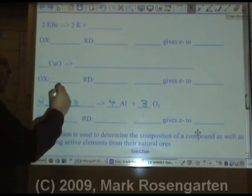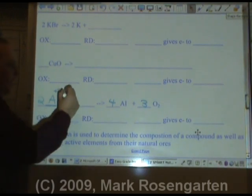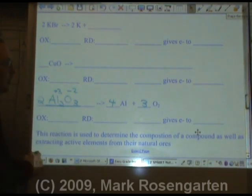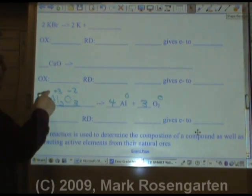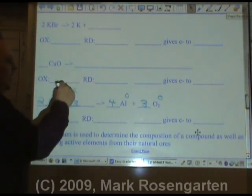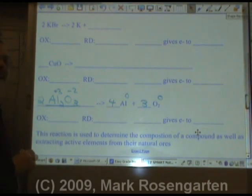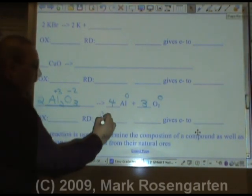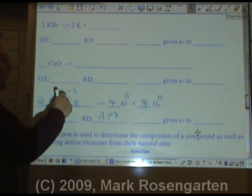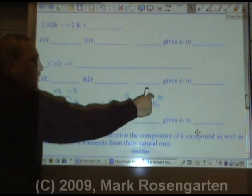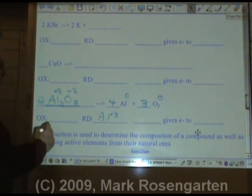Aluminum is plus three according to the periodic table. Oxide is minus two. These guys, again, they're not in a compound. They don't have any charge. The aluminum being plus three going to zero, its charge was reduced by gaining three electrons. Al plus three. The oxide goes from minus two to zero by losing two electrons.